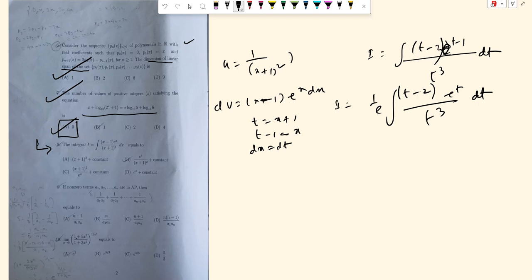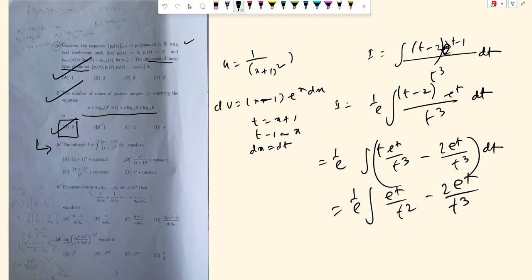Factoring out the constant and splitting the integral: 1 over e times the integral of (e^t over t squared minus 2 e^t over t cubed) dt.